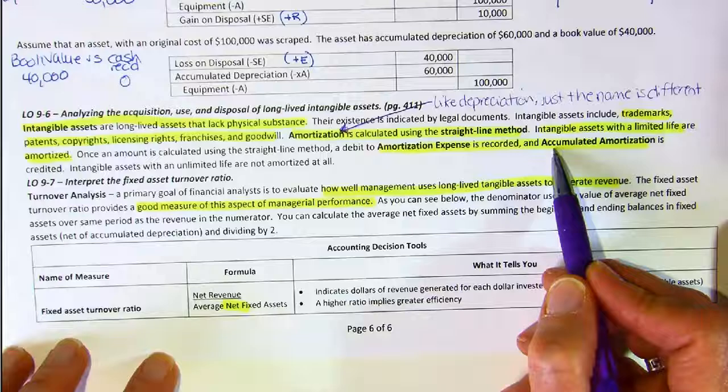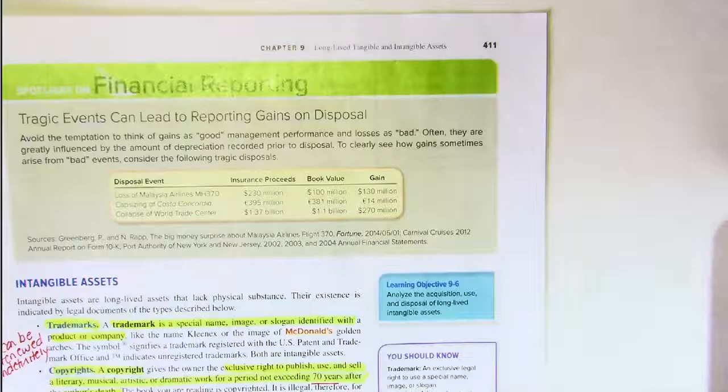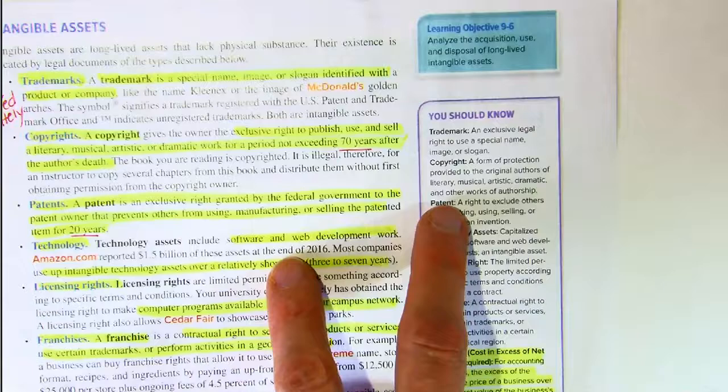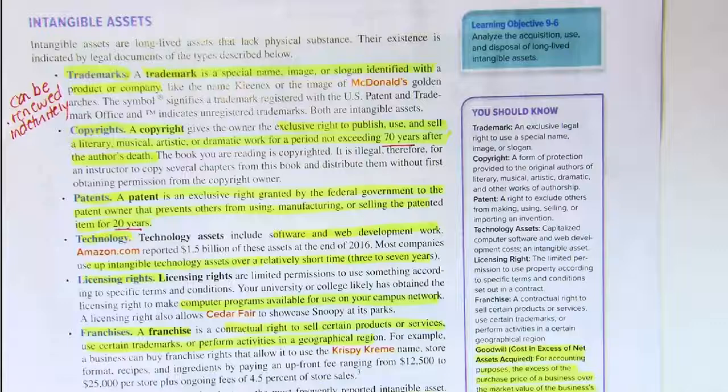If an intangible asset has an unlimited life, then it is not depreciated or amortized. I'd like to refer you to page 411 in your textbook — you can look at this on your e-text or in Smart Book. All I'm going to expect you to do in this portion of the chapter is to be able to recognize intangible assets and the fact that we call the wearing out of intangible assets amortization.